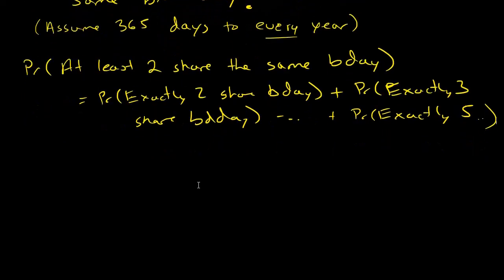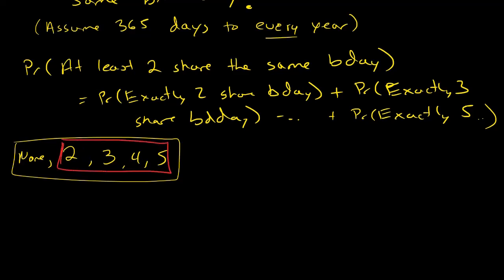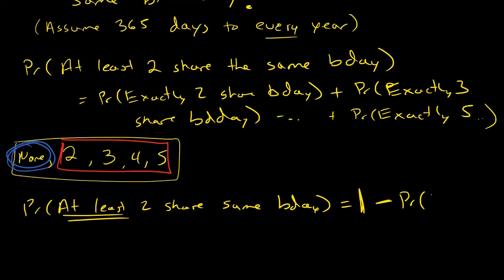What is our sample space? You could have two share the same birthday, or you could have none. You can't have one person share the same birthday with themselves—that doesn't work. So you can have none of them share, you could have two share, three, four, or five. This is the sample space. At least two would be two or more, so the complement is none. The probability that at least two share is one minus the probability that none share a birthday. Whenever you see the word 'at least,' you should always be thinking about complements.